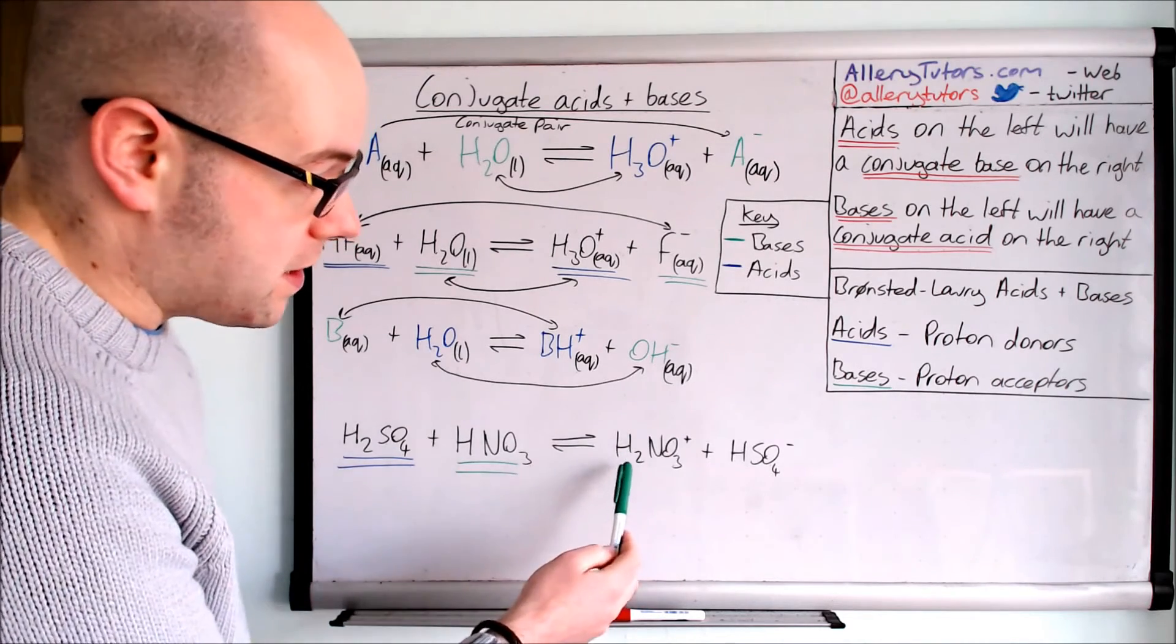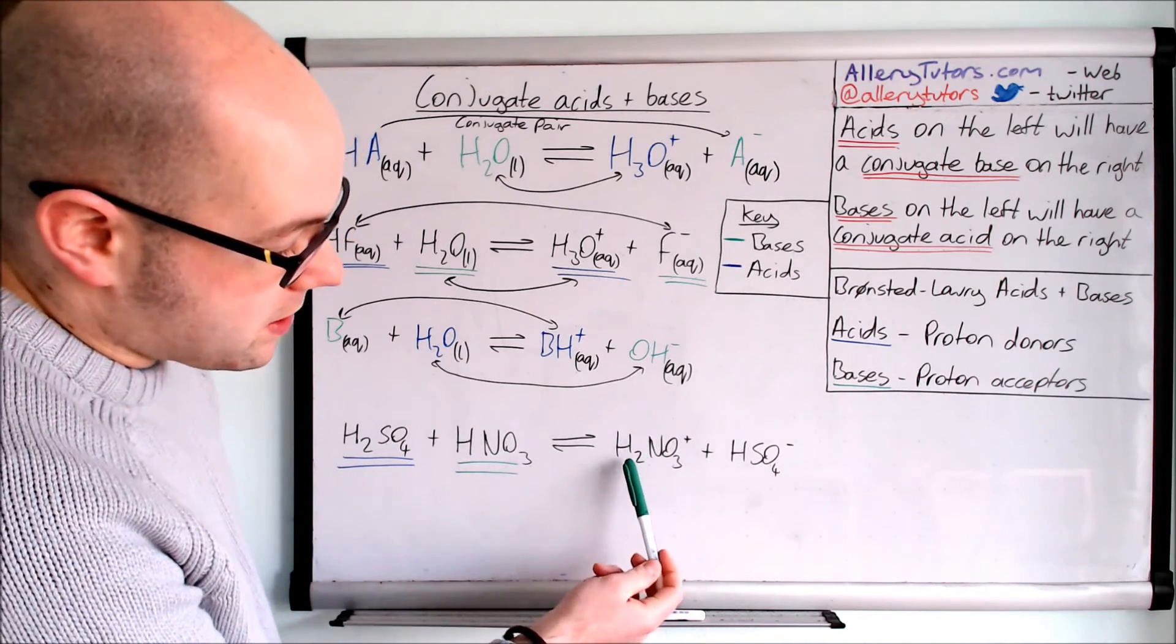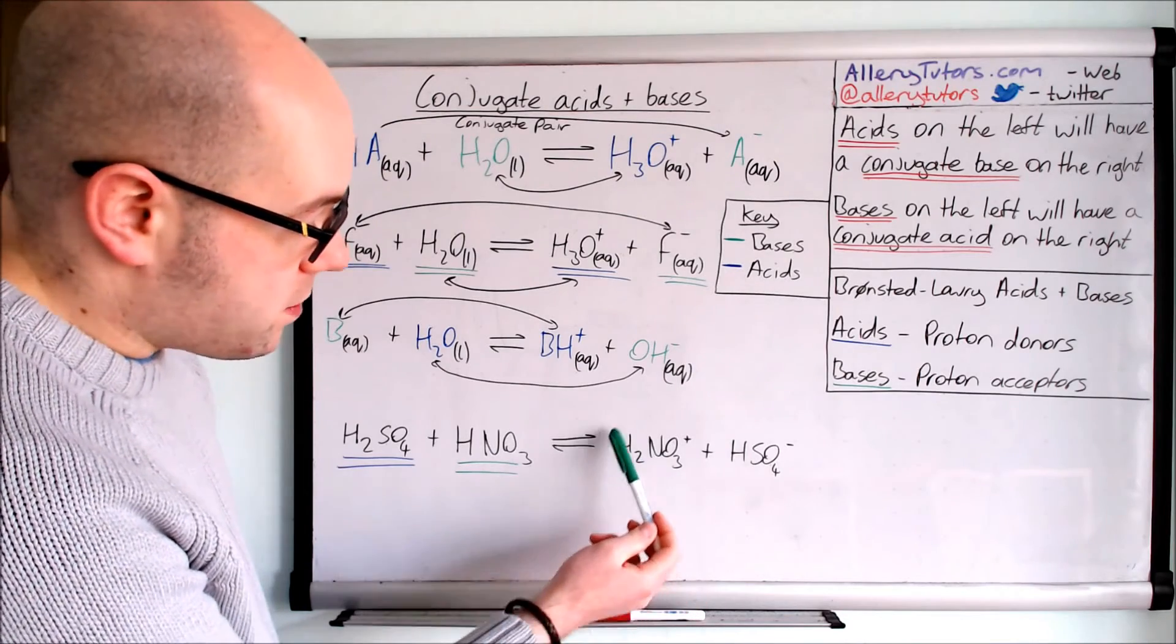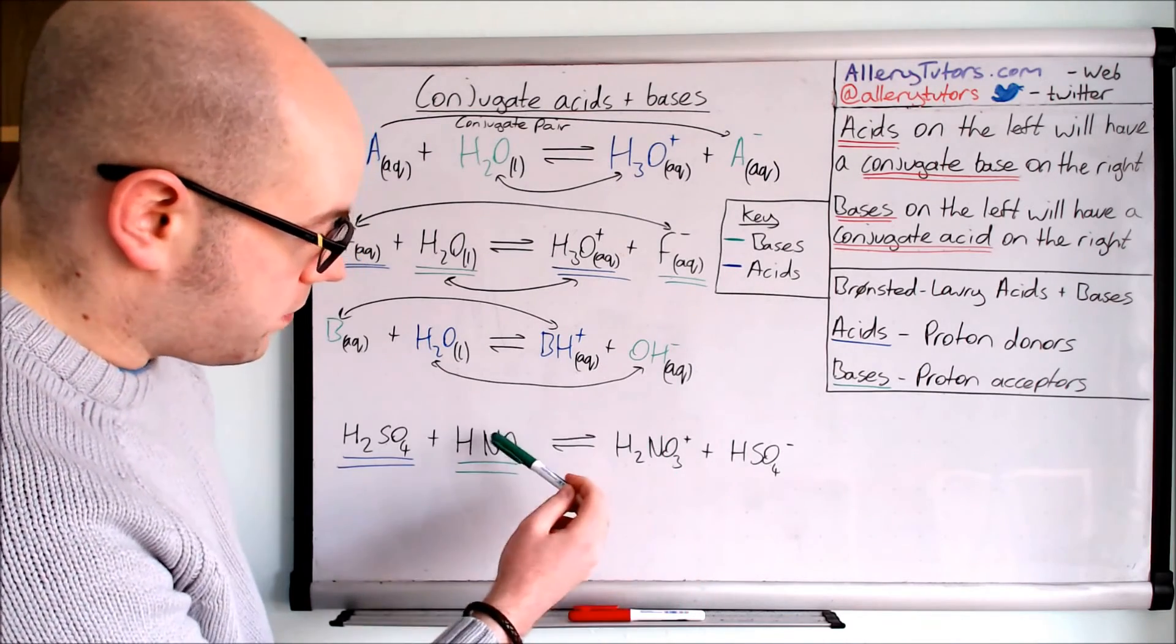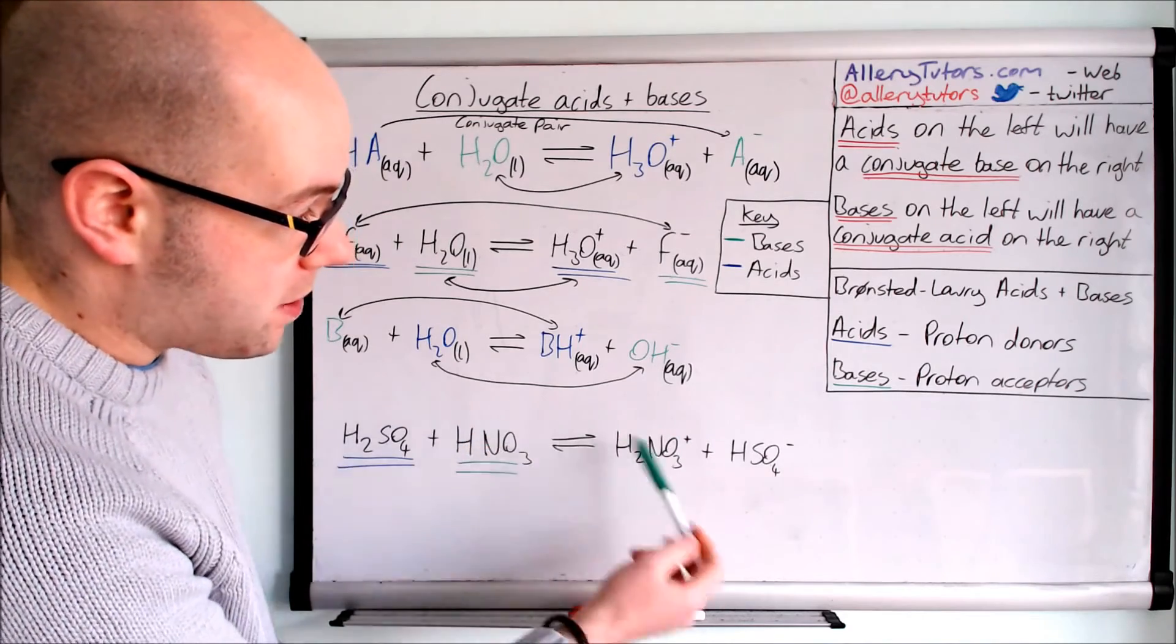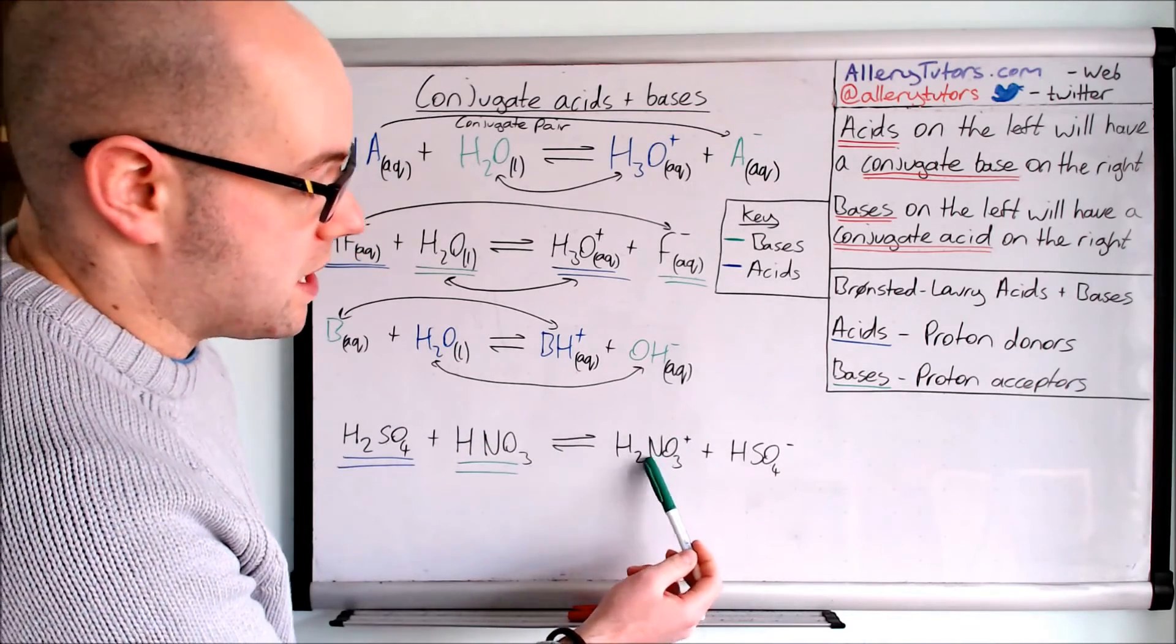So just looking at this on this side, pairing these up. So you can see this is H2NO3+. This would donate a proton to form this. So this is a proton donor going backwards. So this makes this the acid.